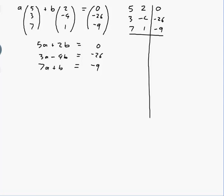If I do row 2 swaps with row 3, then I'll get 5, 2, 0; 7, 1, -9; 3, -4, -26. So now I could get the 0 above and below that 1 there. So row 1 is replaced by row 1 minus 2 of row 2. And row 3 is replaced by row 3 plus 4 of row 2. Yep, that'll do it.